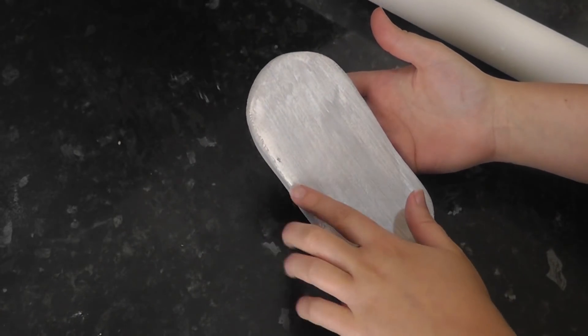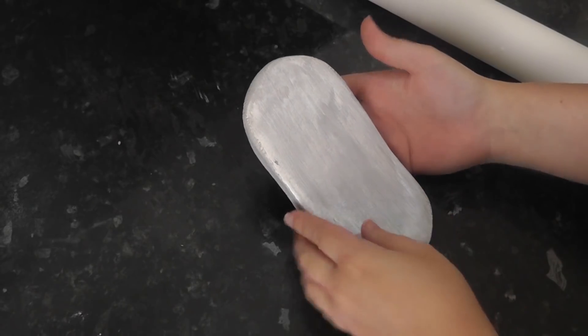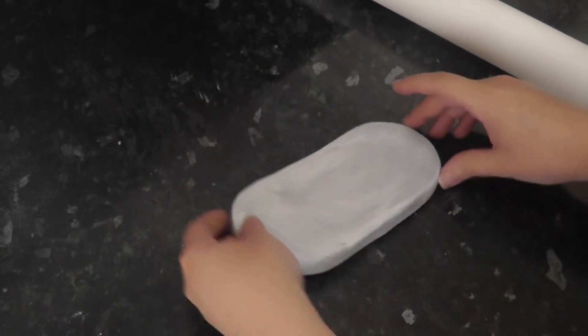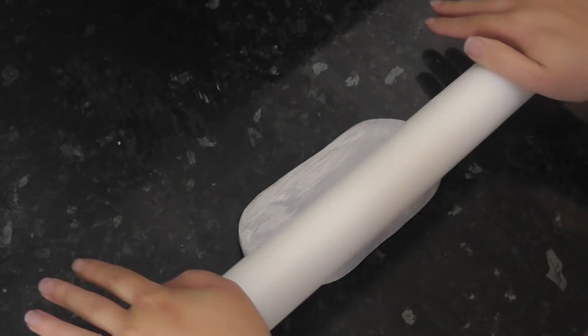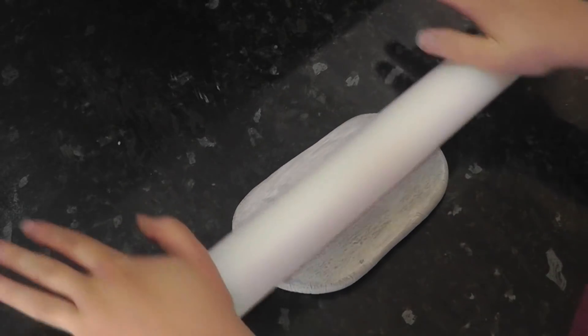As our panels are vertical, we want our crackling effect to match, so we need to roll across rather than down. Turn your paste the right way and apply pressure with the rolling pin. You will see the cracks starting to form.